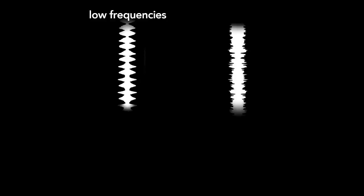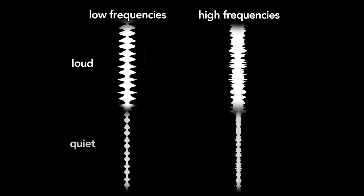A soundtrack that oscillates slowly produces low-frequency sounds. If it oscillates more rapidly, it will produce higher frequencies. The volume is determined by the amplitude or width of the soundtrack. Louder sections are wide, and quieter sections are thinner.